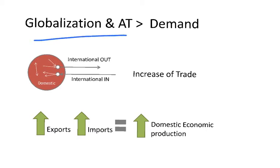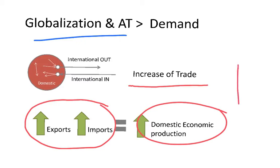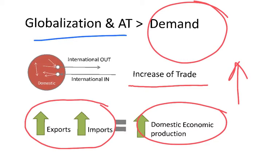Globalization and transport also have implications on demand — on how many people are willing to travel by air. Globalization leads to an increase in trade, meaning more exports and imports among countries. This increase in exports and imports causes local economies to grow, and as the domestic economy increases, people have more money in their pockets, which means an increase in demand — so more people are going to travel by air.